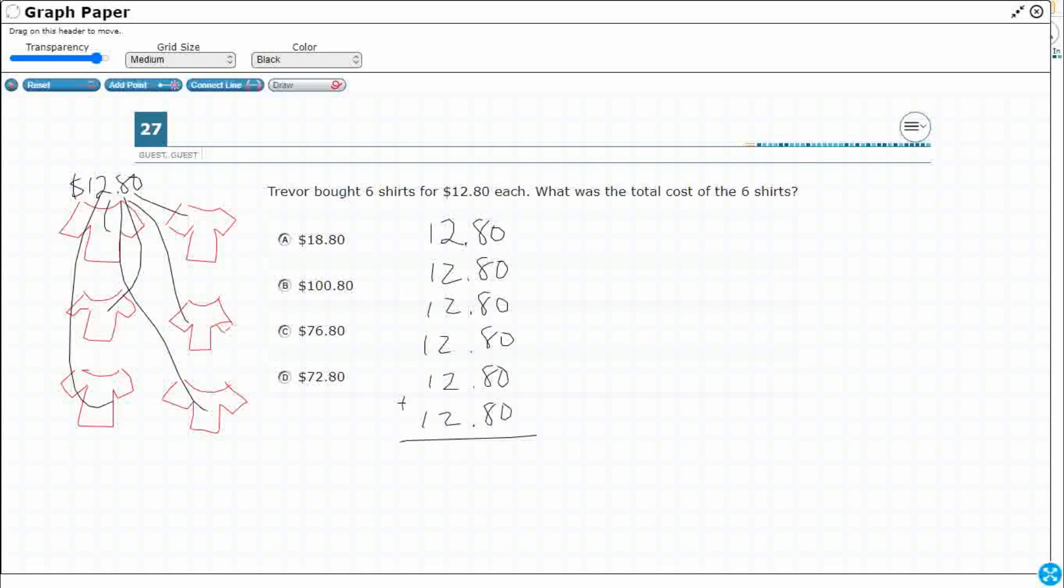If we wanted to visualize this, let's use a strip diagram. Total is what I'm missing. Our total always goes on top. How many shirts do I have? I've got six shirts, so I'm going to cut it in half and cut each half into thirds. There's my six. So 12.8. I'm just going to drop that zero off. I'm just going to say 12.8.